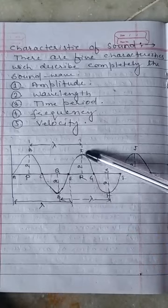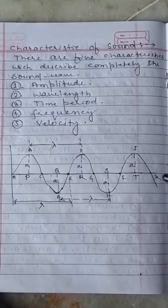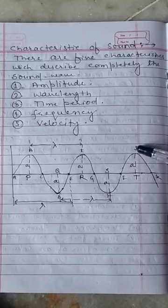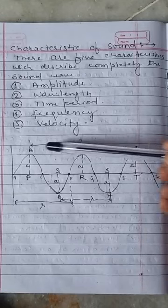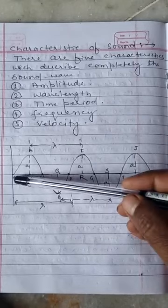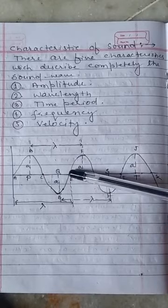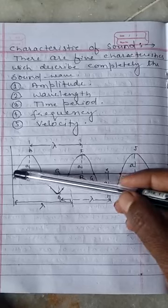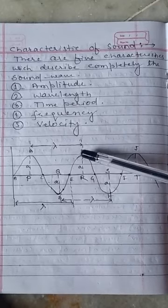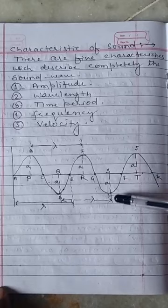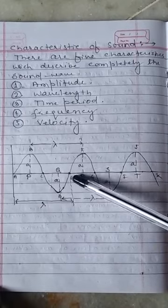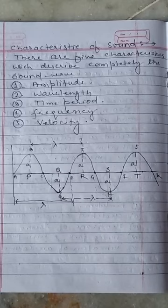Looking at the waveform: this is the amplitude, and this is the wavelength (lambda). One complete vibration is from A to E — that is one complete oscillation. The second oscillation goes from E to I. So we will discuss these five characteristics: amplitude, wavelength, time period, frequency, and velocity.